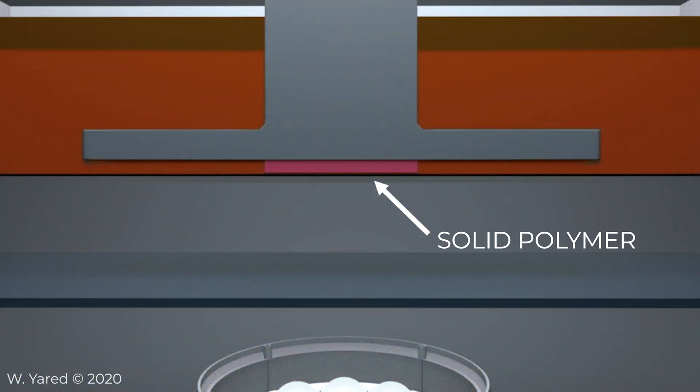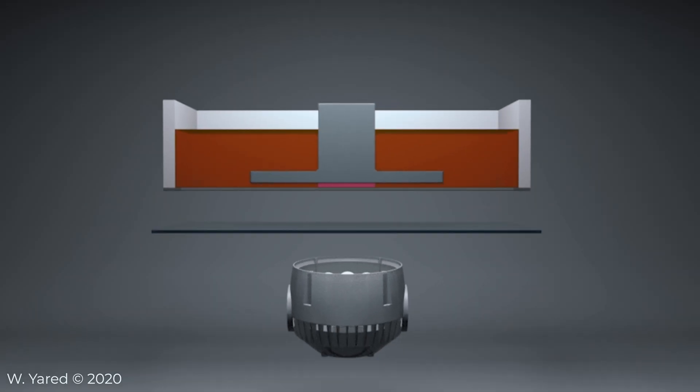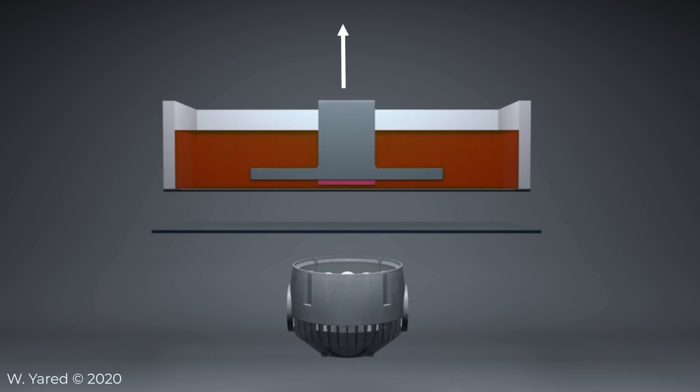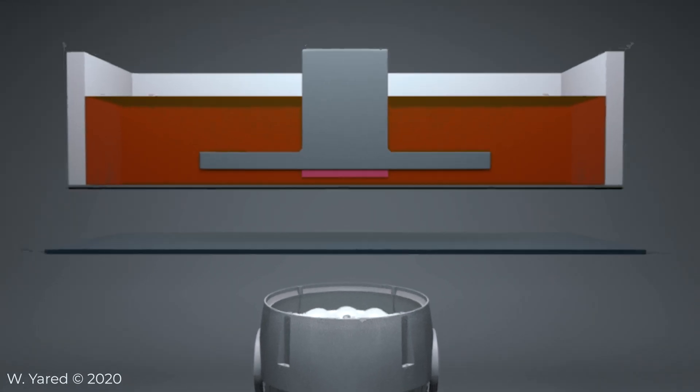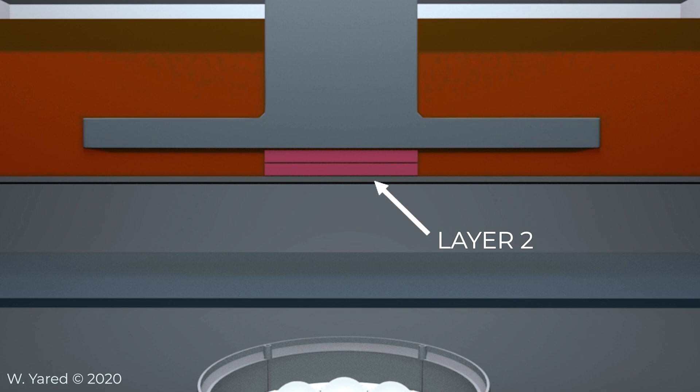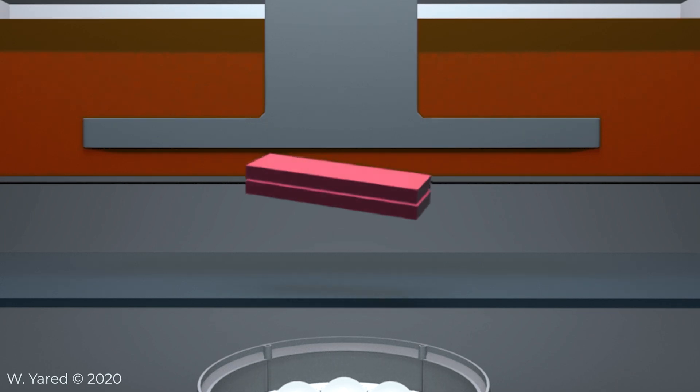Once the first layer is solidified, the vat tilts to detach the polymerized layer, and the platform goes up by a distance of one additional layer. The process of photopolymerization then repeats for each subsequent layer, and the newly solidified layer adheres to the layer above it until a 3D object is formed.